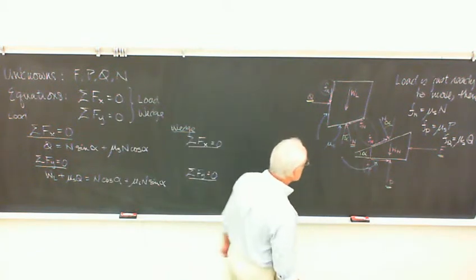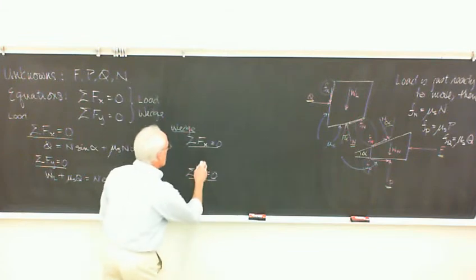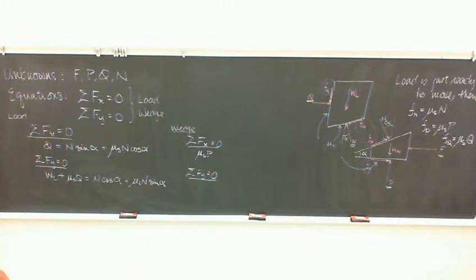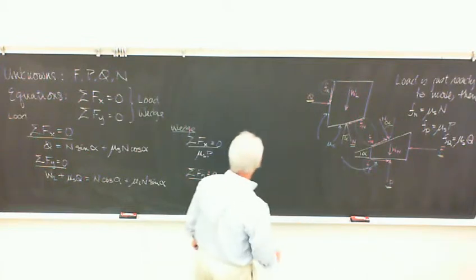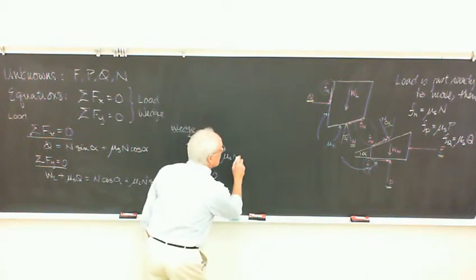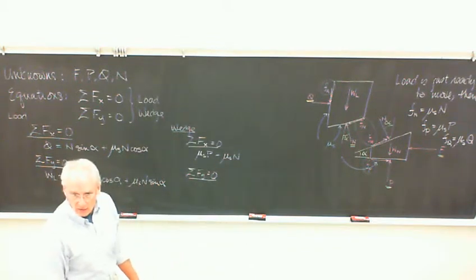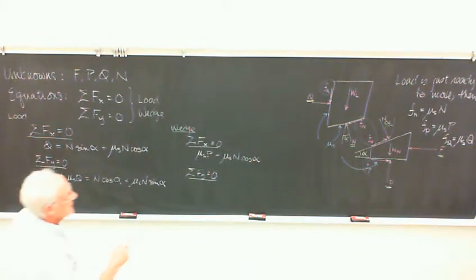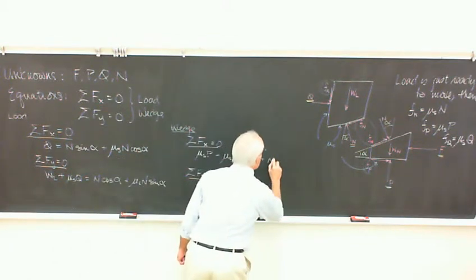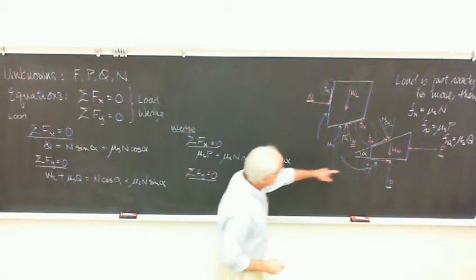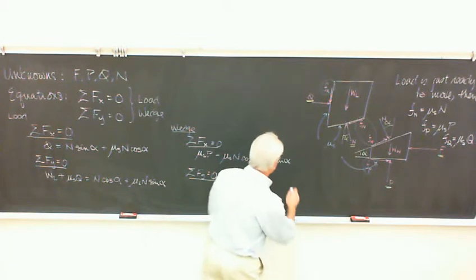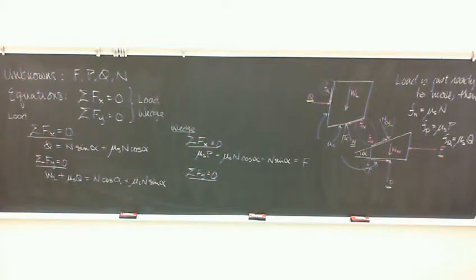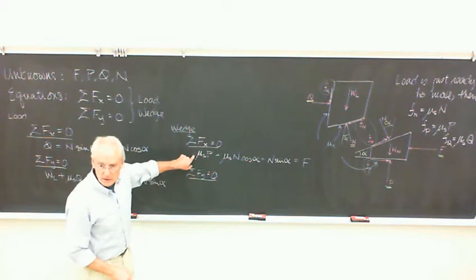For the wedge in the X direction. Let's see. We've got to the right FP, which we'll replace with mu SP. We've got a little bit of the friction on the N face, which is mu SN cosine alpha. Right? That's all the right-facing force. Oh, no. We have a little bit of the normal force itself. N sine alpha. So that's this one, this one, and this one. And that all equals F, the force we're looking for that we need to apply to just get the load to start to move. Does that look good? We agree with that one?